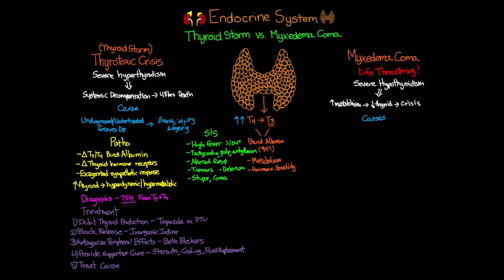Myxedema coma occurs in patients with hypothyroidism when some precipitating stressor is added. These stressors can include infection, trauma, certain drugs such as tranquilizers, barbiturates, and narcotics, or cold exposure — which comes up more often in wintertime. Whatever the stressor, it leads to an increase in the body's metabolism, ultimately depleting the patient's store of thyroid hormone.